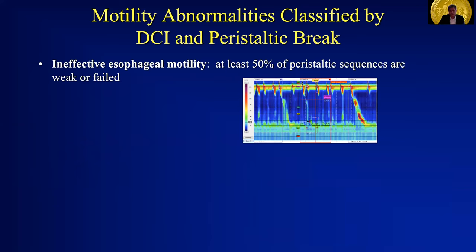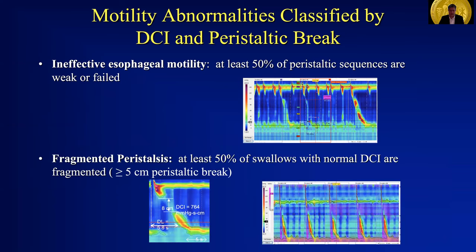The minor disorders of peristalsis include ineffective esophageal motility, in which at least 50% of peristaltic sequences are weak or failed — they can be either. If they're all failed, then we consider that absent contractility, which is a more significant entity. But ineffective motility just means that at least 50% of them are weak or failed. And then fragmented peristalsis — that is, of the peristaltic sequences that are of a normal DCI, at least 50% of those are associated with a peristaltic break of greater than or equal to five centimeters.